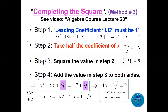Method three is completing the square. The aim is to solve the equation by converting it into a perfect square form. I remind you of the steps from algebra course lecture 20. Step one: the leading coefficient must be one. Step two: take the constant to the other side. Step three: take half the coefficient of x and square it. Step four: add that squared value to both sides.